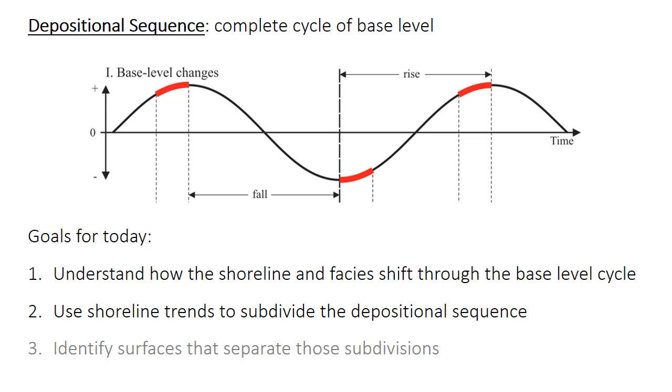First, a bit of review of some terms you've encountered before. You may remember that a depositional sequence is the complete base level cycle, from the top, through the falling limb, to the bottom, and then in through the rising part as well. This depositional sequence is what gives sequence stratigraphy its name, actually.